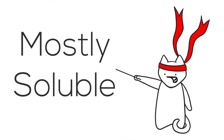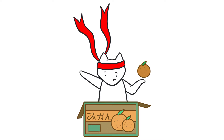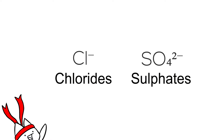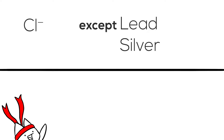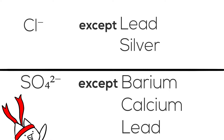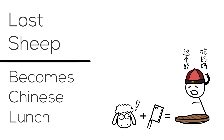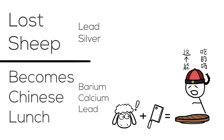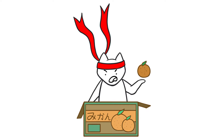Now, on the second category: the mostly soluble salts. This is a category that students will want to pay more attention to, since most exam questions will tend to use this category of salts. Chlorides and sulfates are two types of salts in this category. All chloride salts are soluble, except lead chloride and silver chloride. All sulfate salts are soluble, except barium sulfate, calcium sulfate, and lead sulfate. Here is how to remember them — use the phrase 'lost ship becomes Chinese lunch.' Arrange the two chloride salts and the three sulfate salts in alphabetical order.